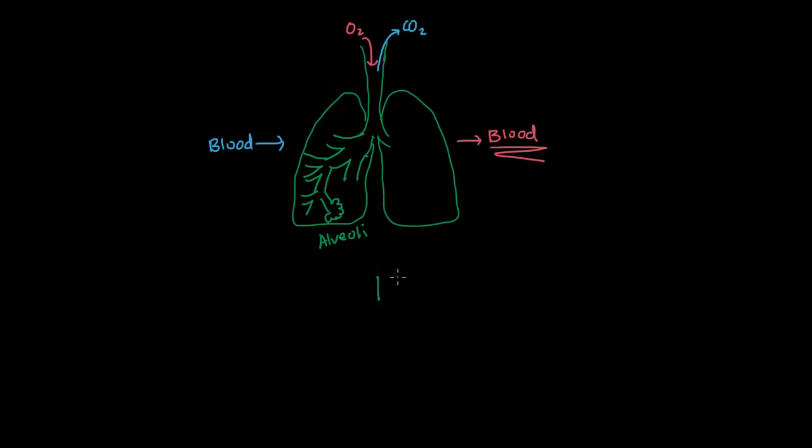So the alveolus looks kind of like a bulb, it's an air sac, it has very thin walls, and lying along the walls, almost in contact, but not quite, is the blood supply.